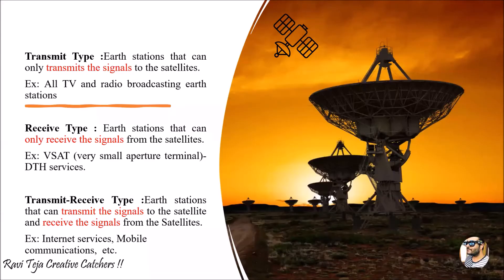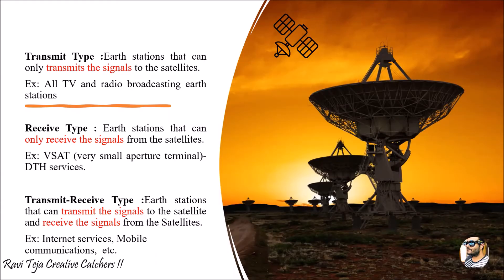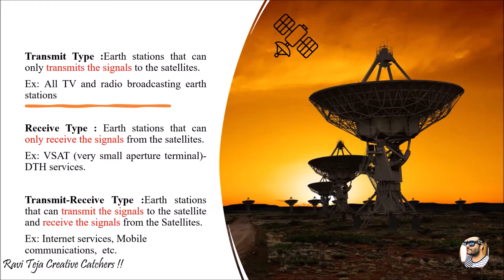Looking at the transmit type: the antennas shown in the diagram are located at earth stations, which are able to communicate with nearby satellites. A transmit-only type earth station can only transmit signals to the satellites. For example, suppose you are recording a live event in a stadium — that live feed needs to be transmitted to a particular satellite so that whoever wants to access that live streaming can get the data from that satellite. We need an earth station only to capture that live feed and transmit those signals to the satellite.